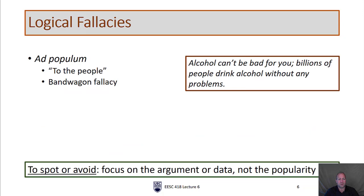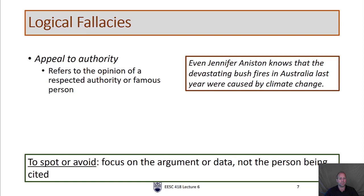Moving along in alphabetical order, the ad populum — also known as the bandwagon fallacy — means: if lots of people agree to something, it must be right. For example: 'Alcohol can't be bad for you — billions of people drink it without any problems.' Obviously this isn't true; there could also be billions of people who drink with problems. Just because billions of people are doing something doesn't mean it's right. To spot or avoid this fallacy, focus on the argument and the data, not the popularity of an opinion.